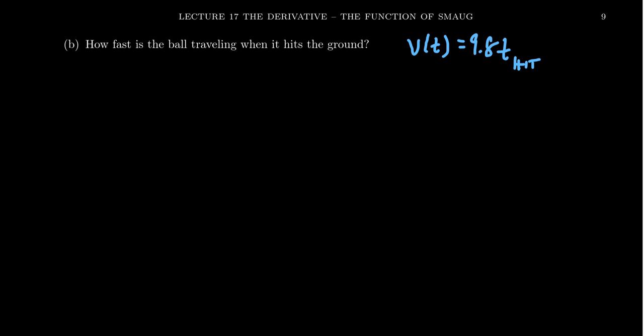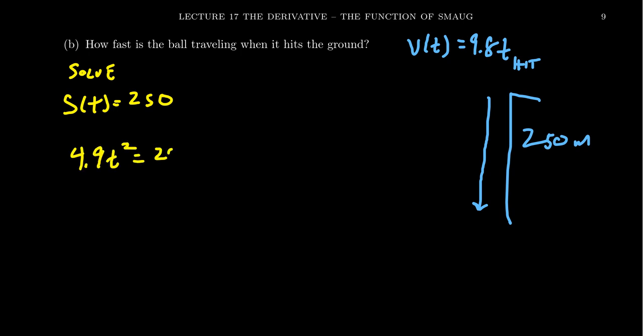Well, if the ball hits the ground, that means it must have traveled the 250 meters. Remember, we had this 250 meter tower we dropped it off of? Once the distance has gone 250 meters, that's when it's going to hit the ground. So we have to solve the equation, S(t) equals 250. Which, remember, S(t), this was 4.9t². That is equal to 250.